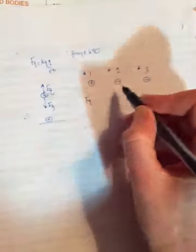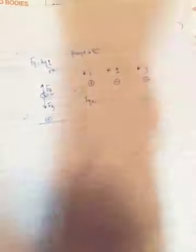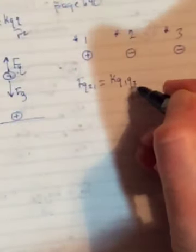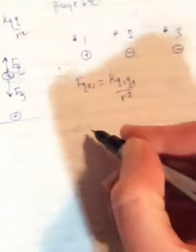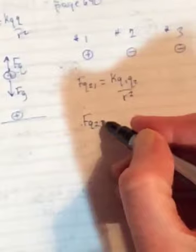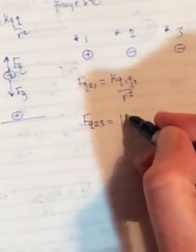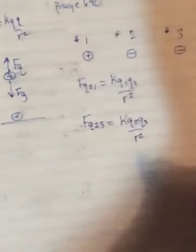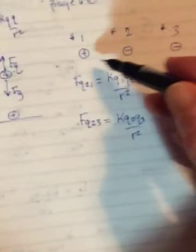So first you would find the force on number 2 from number 1 by doing FQ12 is equal to KQ1Q2 over R squared. Then you would find the force on number 2 from number 3 and it would be FQ equals KQ2Q3 over R squared. And so you would find the value for both of these.